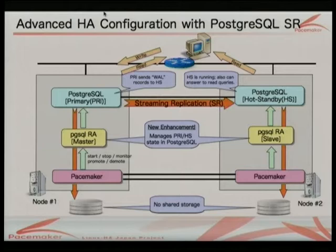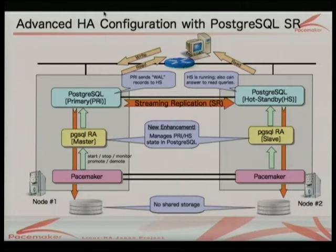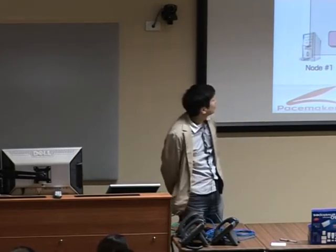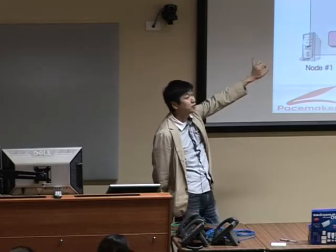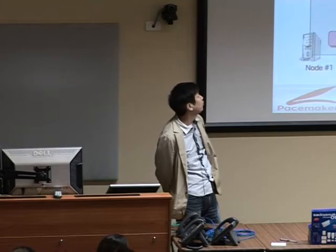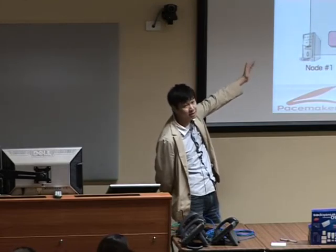In the replication case, the PostgreSQL database runs on both nodes. On one node it runs as primary status, and on the other node it runs as hot standby status — that's the PostgreSQL terminology. Data written to the primary is immediately sent to the hot standby. Both nodes write to their own disk, so there is no longer shared storage. Since PostgreSQL runs in two different statuses, pacemaker needs to handle those two different statuses, and so we need additional features in the resource agent script.